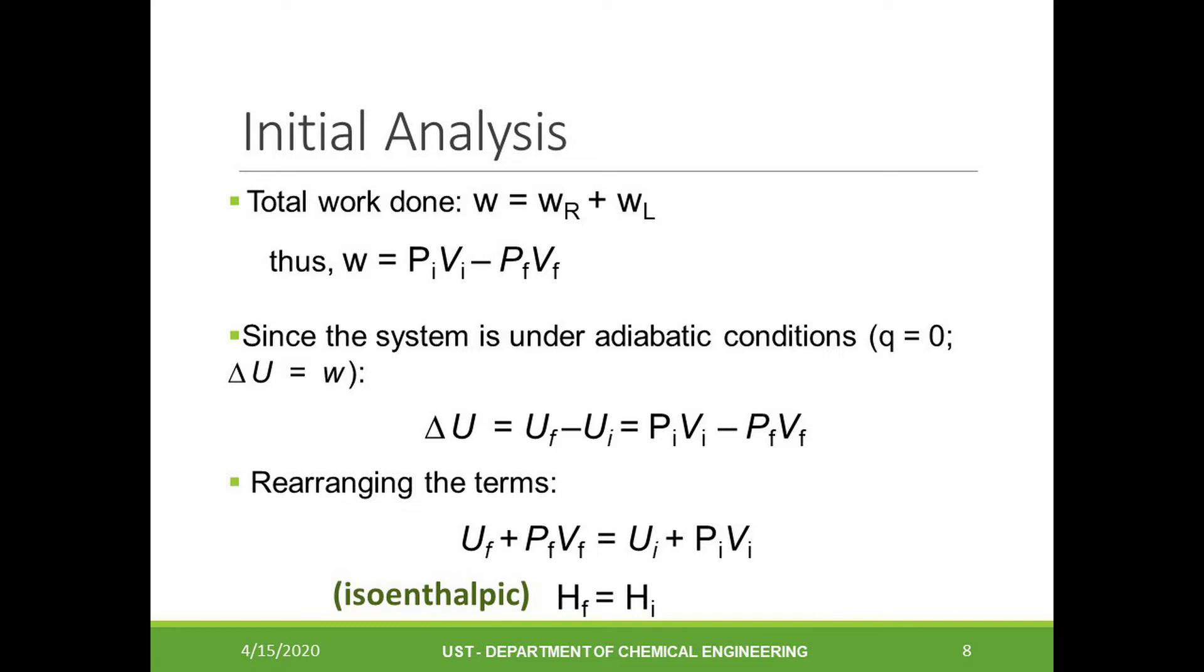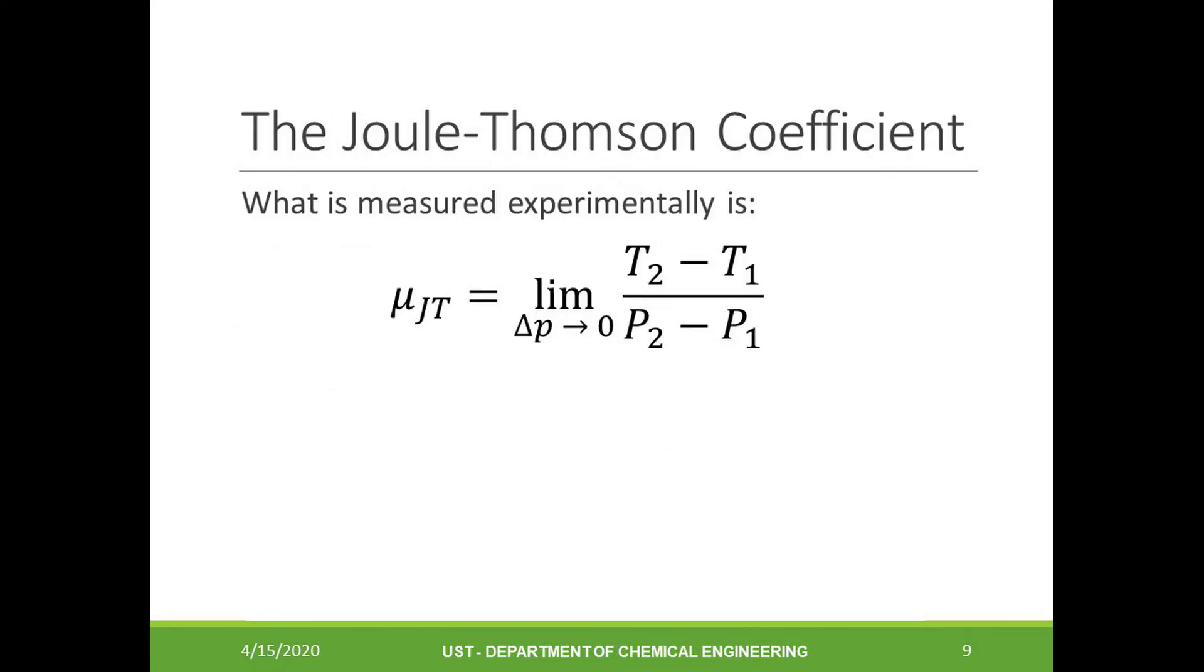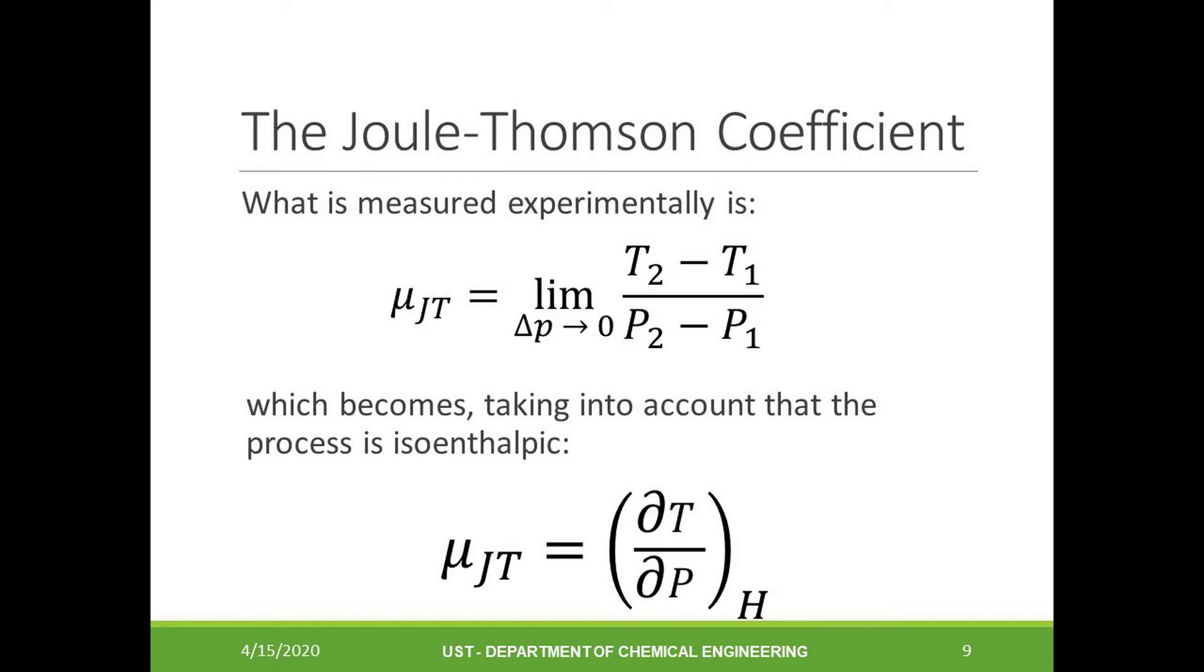In the experiment, what is actually measured is a temperature change accompanying a pressure change under constant enthalpy. This is known as the Joule-Thompson coefficient, or we can use the Greek letter μ to denote this. The value of the Joule-Thompson coefficient can be negative or positive for a real gas. At this point, I want you to remember this equation because we will use this in our succeeding derivations.